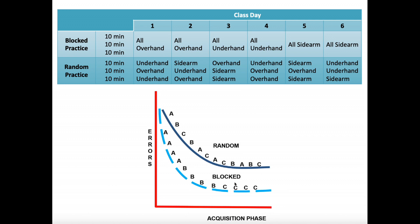So why would we want to do random practice? It turns out that when looking at long-term retention of the motor skill, random practice leads to better retention. Blocked practice leads to better performance particularly in the short term, but is not associated with as good long-term retention. If you need someone to learn a motor skill for just a short period, blocked practice is better. But if you want long-term retention, random practice is definitely better — even though there are initially more errors, long-term learning is superior with random practice.